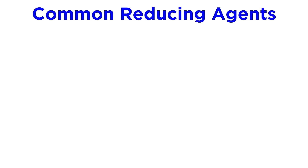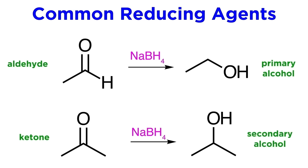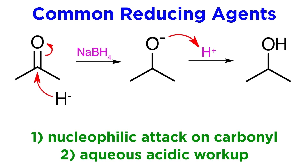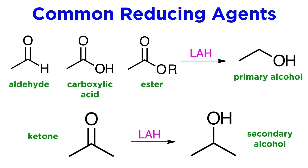There are a number of reducing agents that can act on carbonyl-containing compounds. Sodium borohydride can reduce aldehydes and ketones to give primary and secondary alcohols respectively. This happens when a hydride attacks the carbonyl carbon, pushing the pi electrons in the carbonyl up onto the oxygen, and the resulting oxyanion is protonated by aqueous acidic workup.